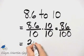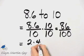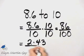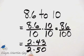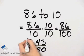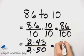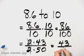86 is 2 times 43. 100 is 2 times 50. So I can divide out that common factor of 2 and I have 43 over 50.